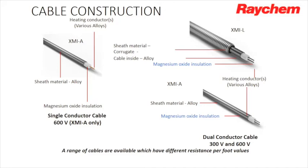Both cables are made up essentially the same way. You'll have either one or two conductors, and on the outside is your insulation — a magnesium oxide insulation. Magnesium oxide is very hydrophilic, meaning it loves water, so moisture can be very detrimental to the heat trace cable. To protect it, the outside is covered with a metal alloy sheath, which also serves as the ground conductor.